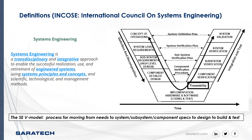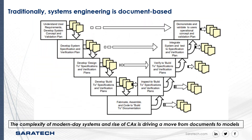To really get the right answer, we need to understand what the needs are, what the specs are, and how to relate those two at the system, subsystem, and sometimes even the component level. That's really what systems engineering is all about. That movement from needs to specs is really captured in the systems engineering V model — the process for moving from needs to component specs, through design, build, test, and validation.